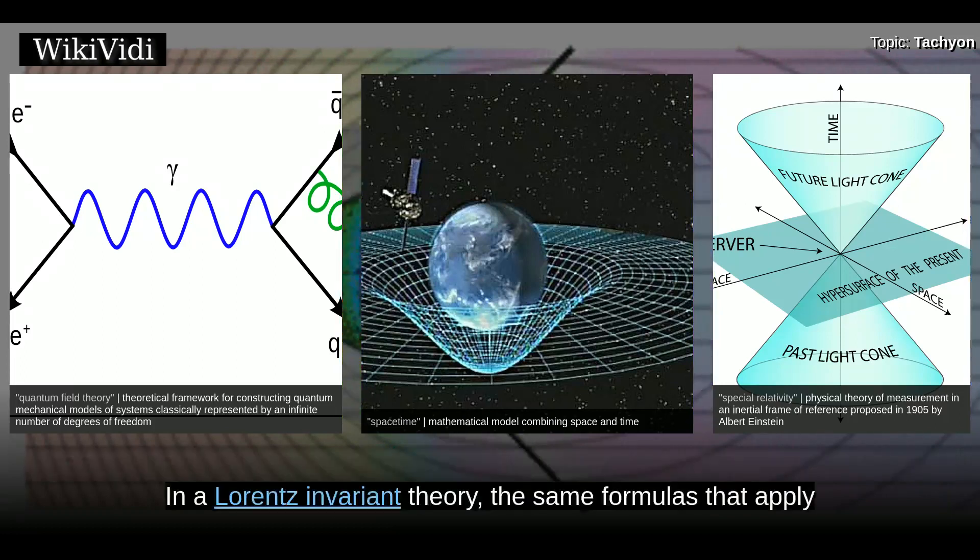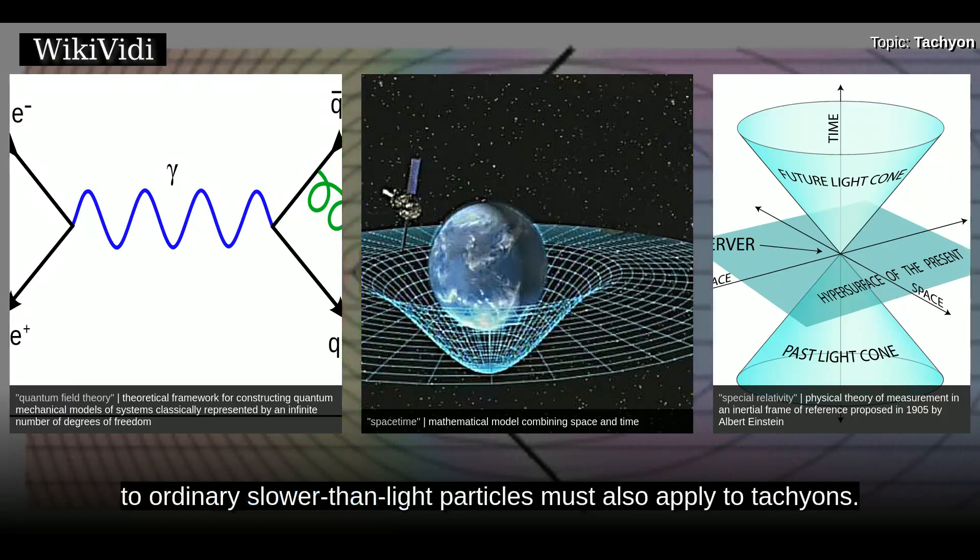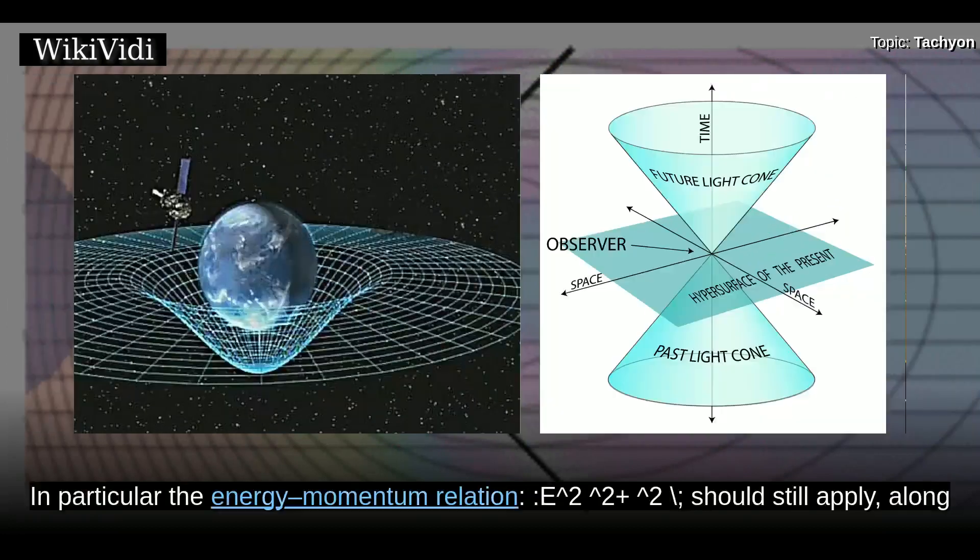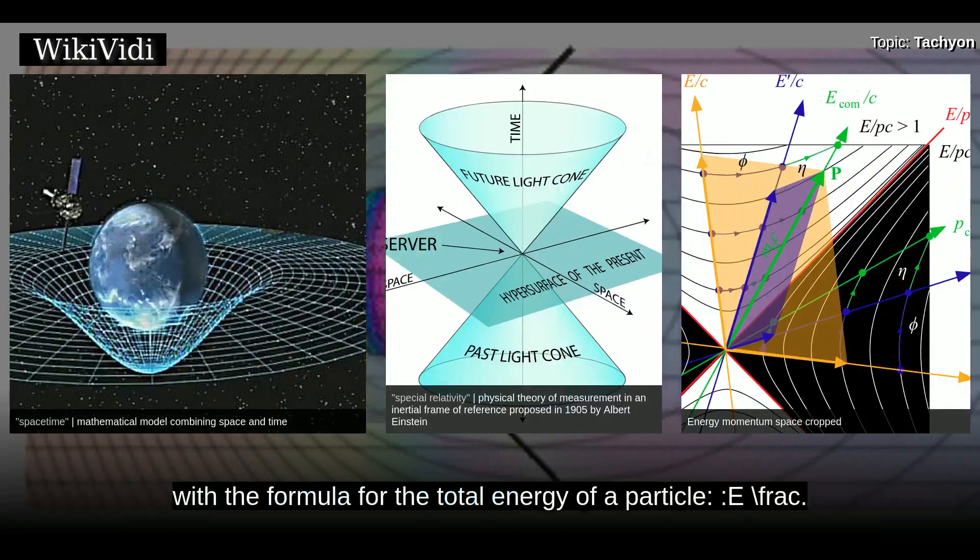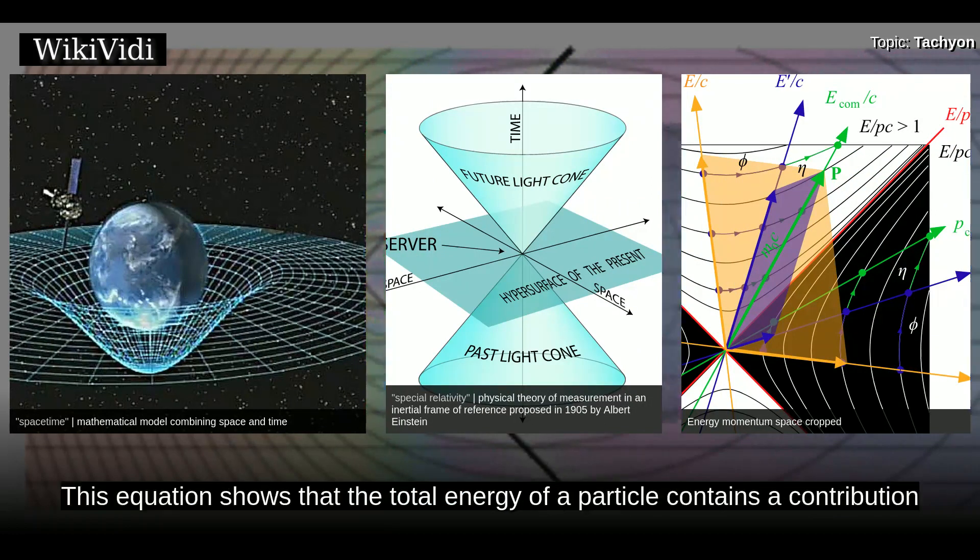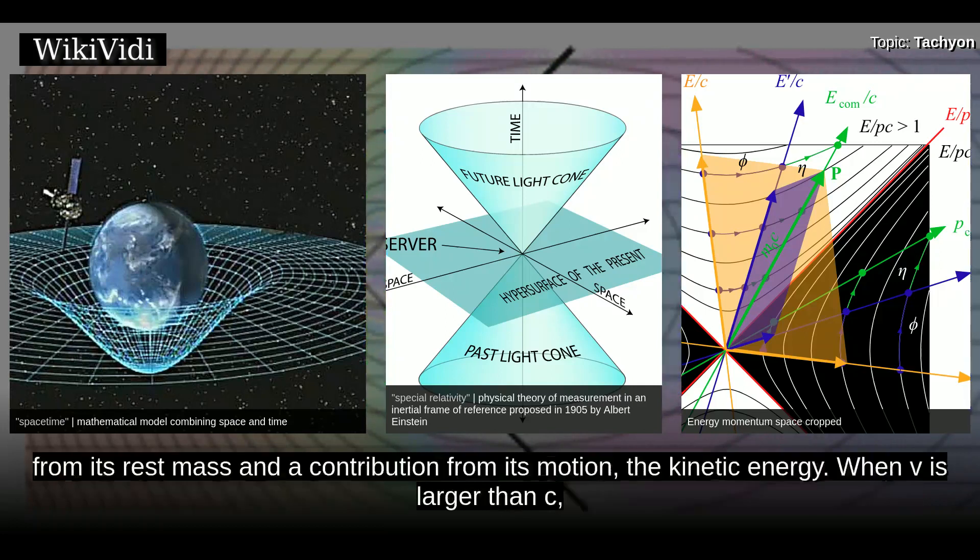In a Lorentz invariant theory, the same formulas that apply to ordinary slower-than-light particles must also apply to tachyons. In particular, the energy-momentum relation should still apply, along with the formula for the total energy of a particle. This equation shows that the total energy of a particle contains a contribution from its rest mass and a contribution from its motion, the kinetic energy.